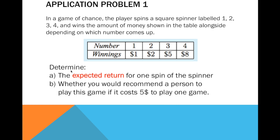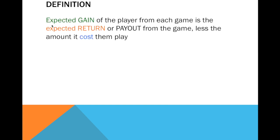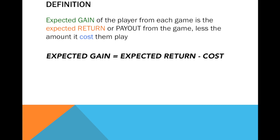Here are the questions: determine the expected return for one spin of the spinner, and determine whether you would recommend a person to play this game if it costs five dollars to play one game. Now, what is expected return? We have three terms here — expected gain, expected return, and cost. The expected gain of the player from each game is the expected return or payout from the game less the amount it costs to play. As a formula: expected gain equals expected return minus the cost. This is like in business where expected gain is your profit, expected return is the total sales, and cost is the total cost.